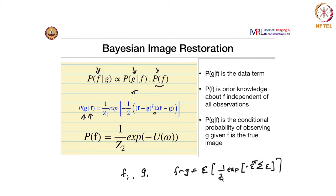This F minus G at every point is the noise — so you are just modeling the noise here. You are also expressing what the probability of observing G given a certain F is, because G is the noisy version of F.